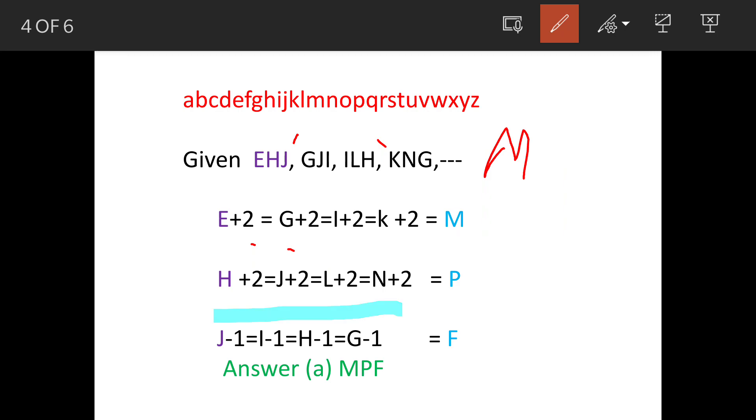Now the last one, that is J onwards, the pattern is different. J-1=I, so here we have I, last letter of second group. Then I-1=H, so we have H here.